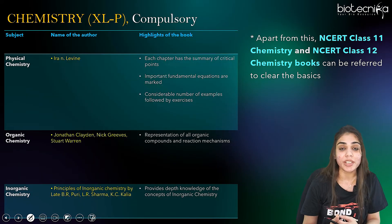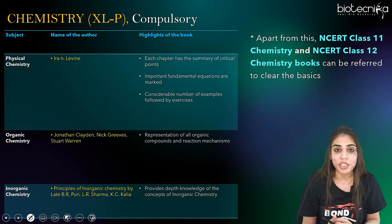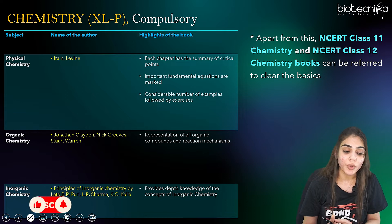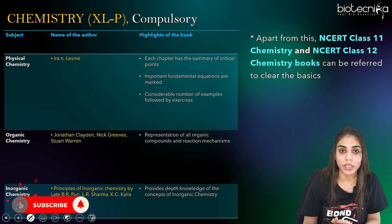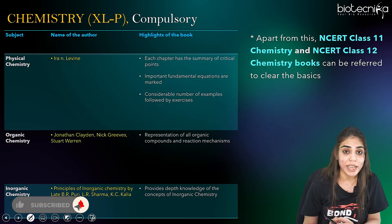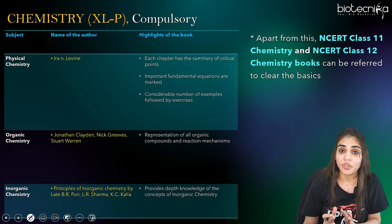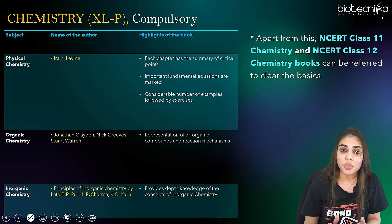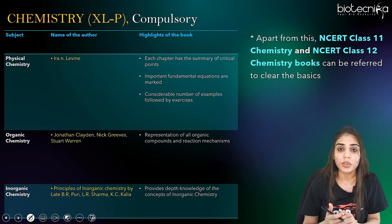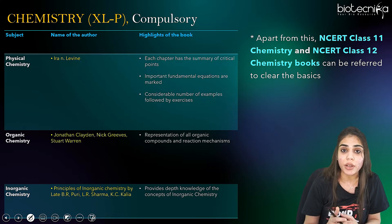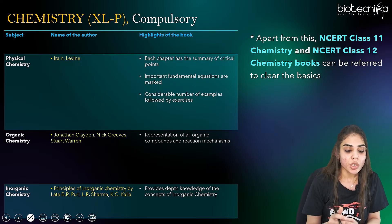Coming to the next section, that is Section P or chemistry. This is a compulsory section for all. In chemistry you have three sections: physical chemistry, inorganic chemistry, and organic chemistry. We are going to see a separate book for all three sections.